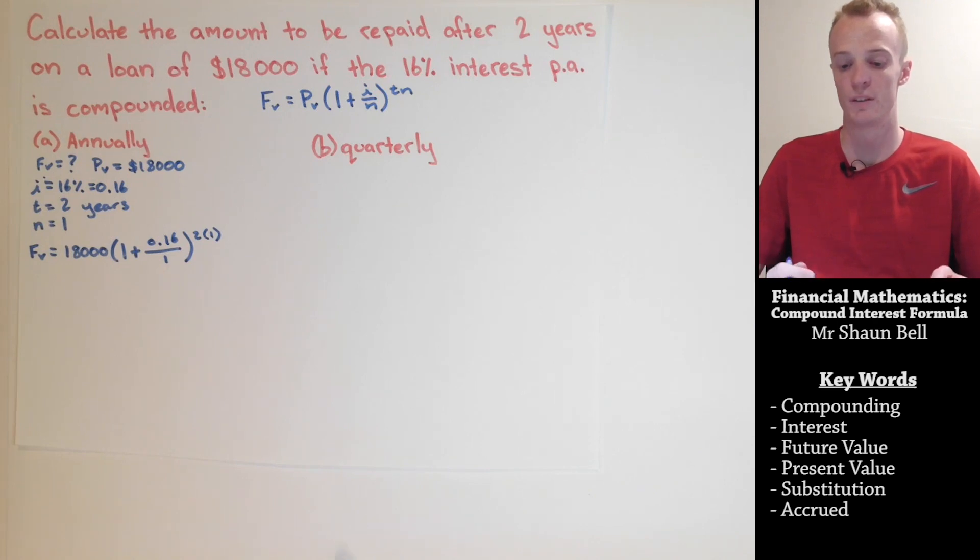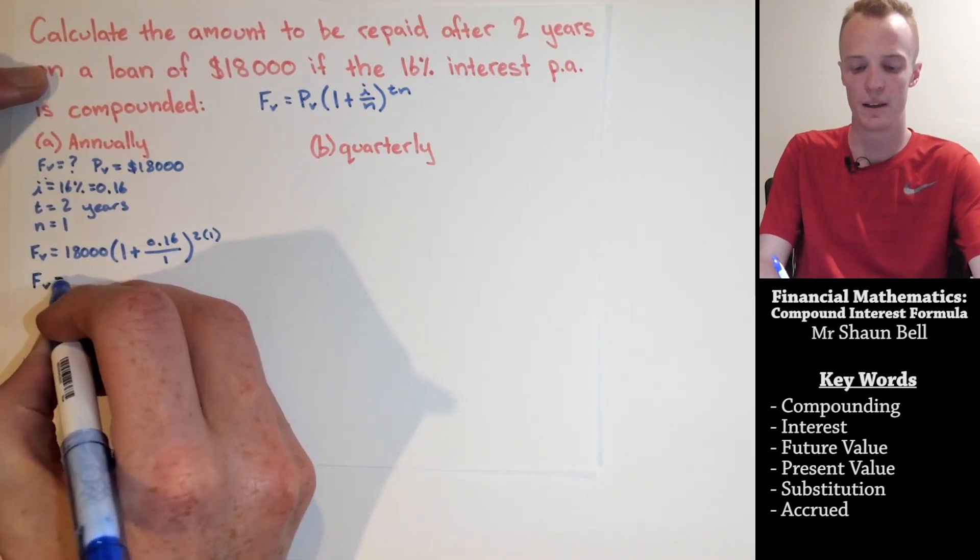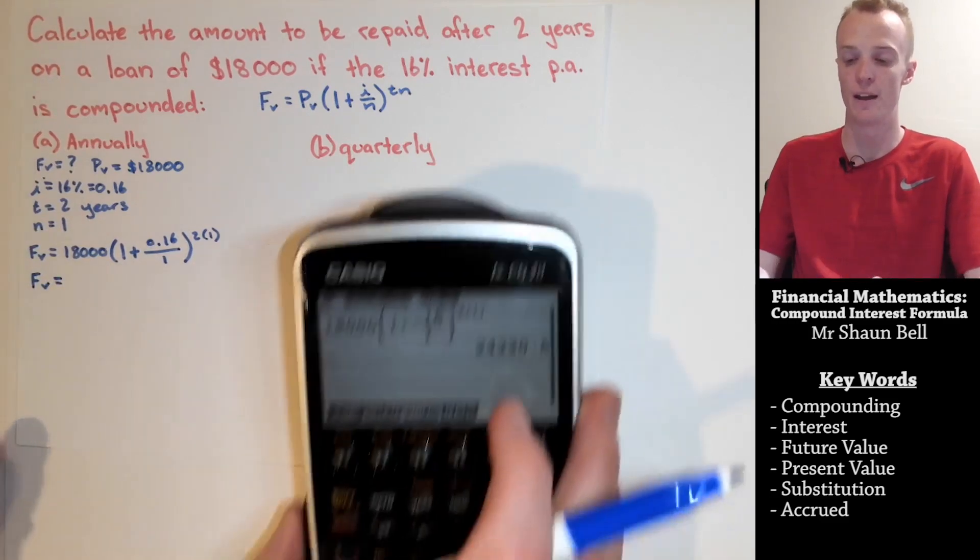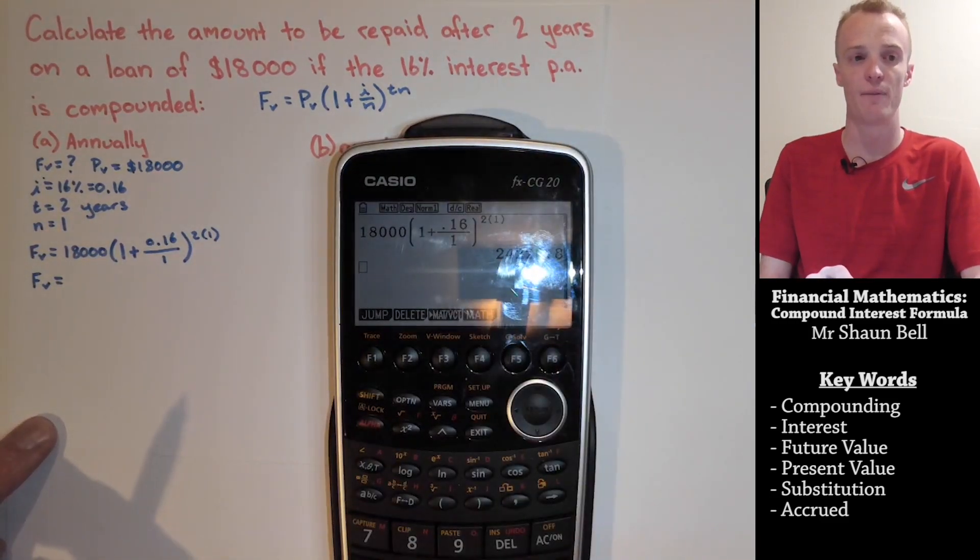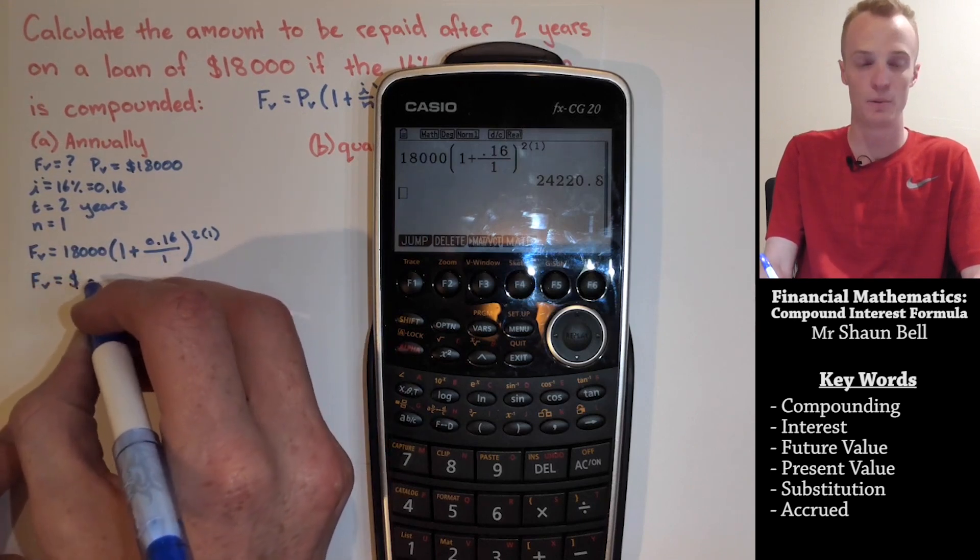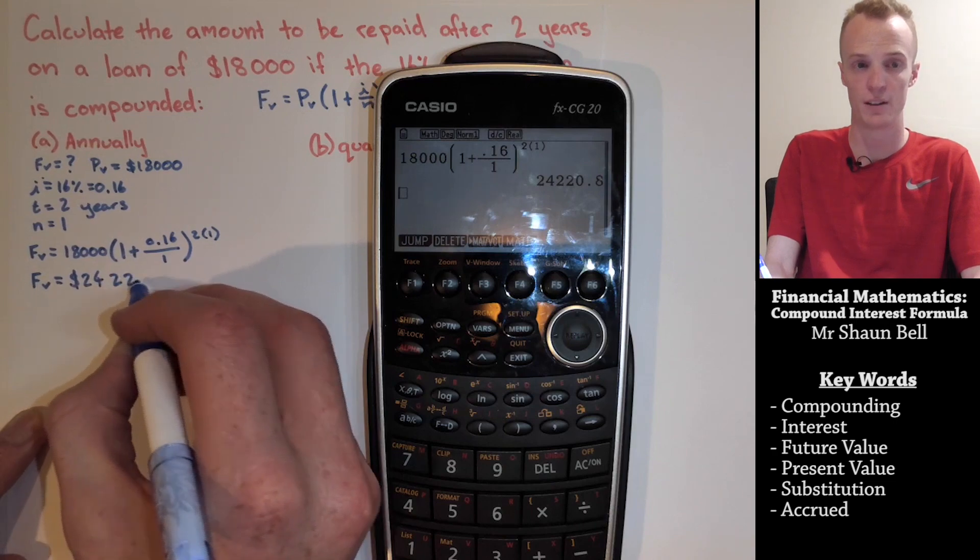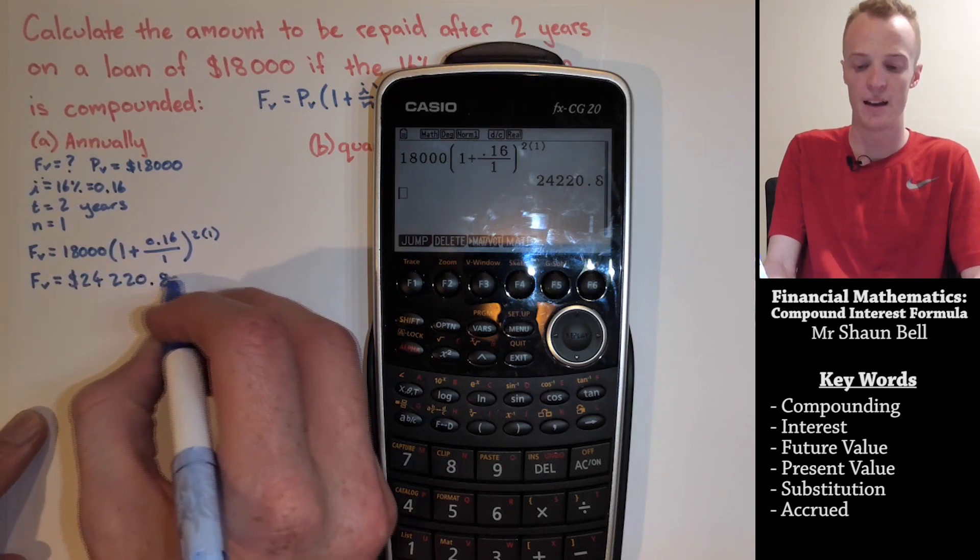From here, you've got 1 of 2 options. You could simplify it down, or you could just simply get your calculator out and input that information like I have here. So our future value is equal to $24,220.80.